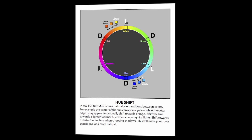Shift the hue towards a lighter, warmer hue when choosing highlights. Shift towards a darker, cooler hue when choosing shadows. This will make your color transitions look more natural.